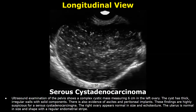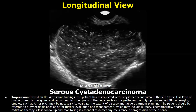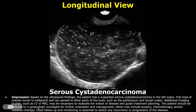After writing these statements, you can write about the other ovary. In the impression, the patient has a suspected serous cystadenocarcinoma in the left ovary. This type of ovarian tumor is malignant and can spread to other parts of the body such as the peritoneum and lymph nodes. It is important to mention additional imaging studies such as CT or MRI, and the patient should be referred to a gynecologic oncologist for further evaluation and management.